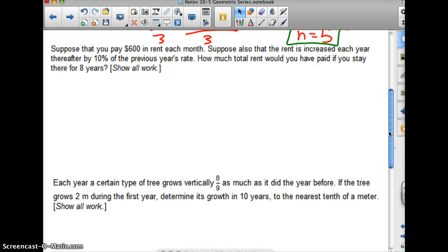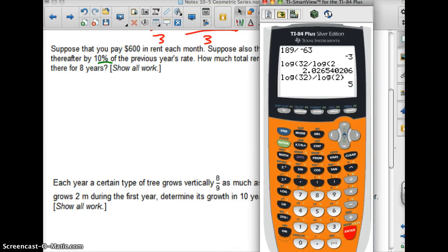Now we've got a word problem. Suppose you pay $600 rent each month. Suppose also that the rent has increased each year thereafter by 10% of the previous year's rate. How much total rent would you have paid if you stayed there for 8 years? This doesn't seem like it, but this is in fact the sum of the geometric series. What we have here is a couple issues that we have to take care of. The rent has increased by 10% of the previous year's rate. So they're not going to increase the rent every month. They're going to increase the rent annually. And we're talking about being there for eight years. So it's probably nice to know how much we're paying for the first year's rent. And that's what we're going to consider the first term.